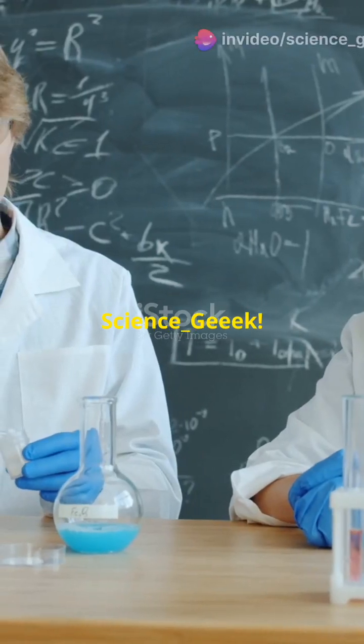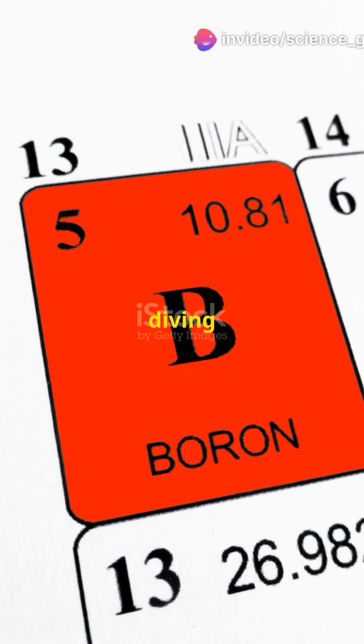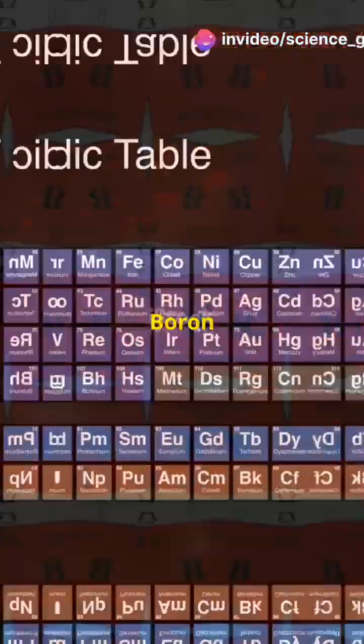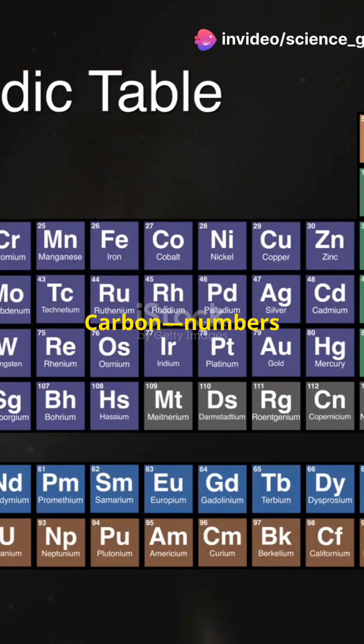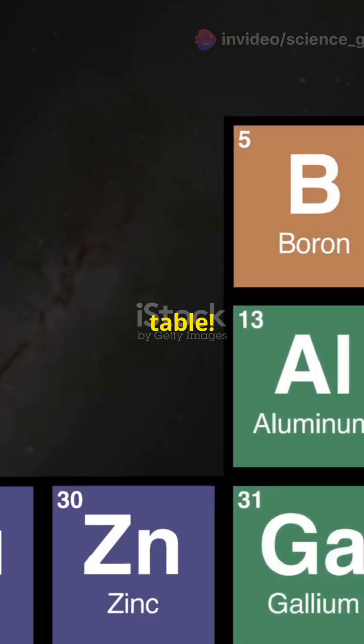Welcome back to Science Geek. Today, we're diving into two fascinating elements, boron and carbon, numbers 5 and 6 on the periodic table.